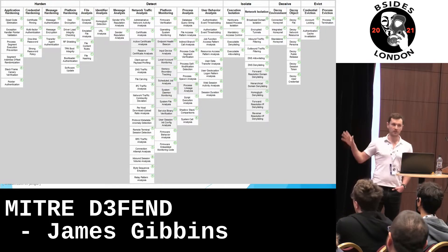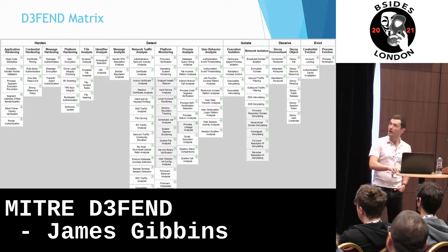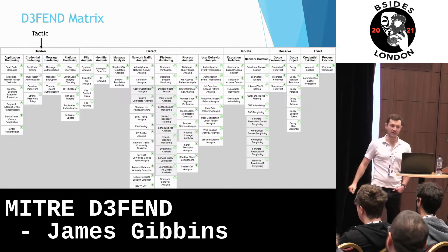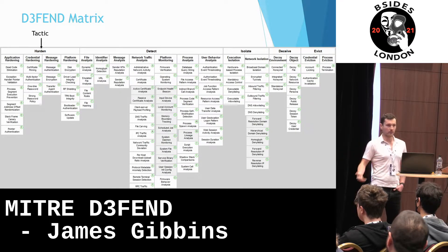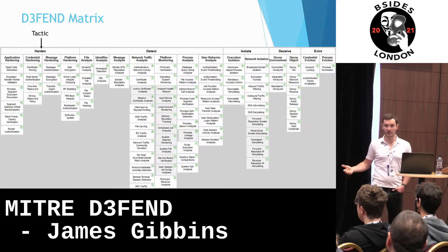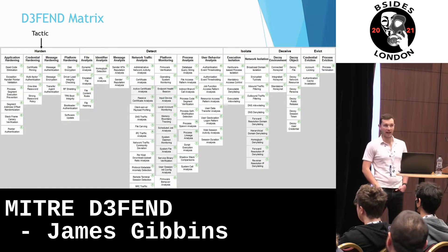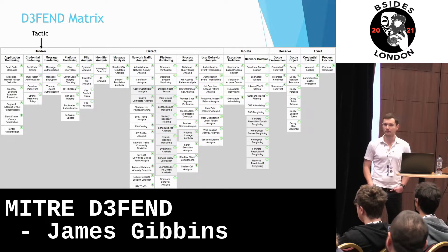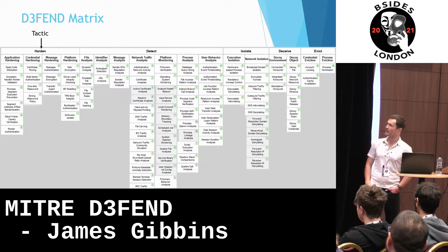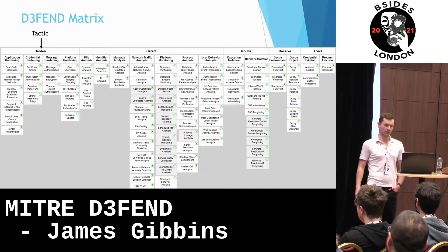There are over 100 different techniques or countermeasures right now. At the top, you have the five tactics. There's Harden — ways to make your system harder to compromise. There's Detect — which is monitoring, analysis, stuff like that. There's Isolate — how to stop an attack spreading through things like allow listing and deny listing. There's Deceive — decoys, honeypots, honeynets. And finally, there's Evict — a way to get the attacker off your system if they're already on, through things like locking their accounts and terminating their shell processes.